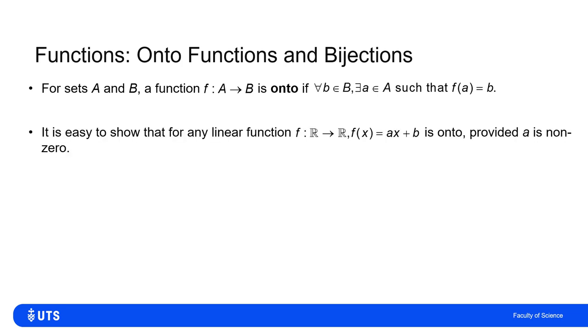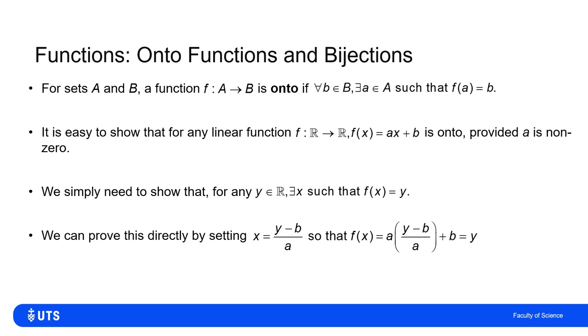I can show that the linear function is onto, provided the slope term is non-zero. If I say f(x) = ax + b and I assume a is not zero, then this will be a function and it will be onto. I can show that fairly easily because if I write f(x) equals y, then for a given y, I just have to show I can solve to find the x that gave me that y.